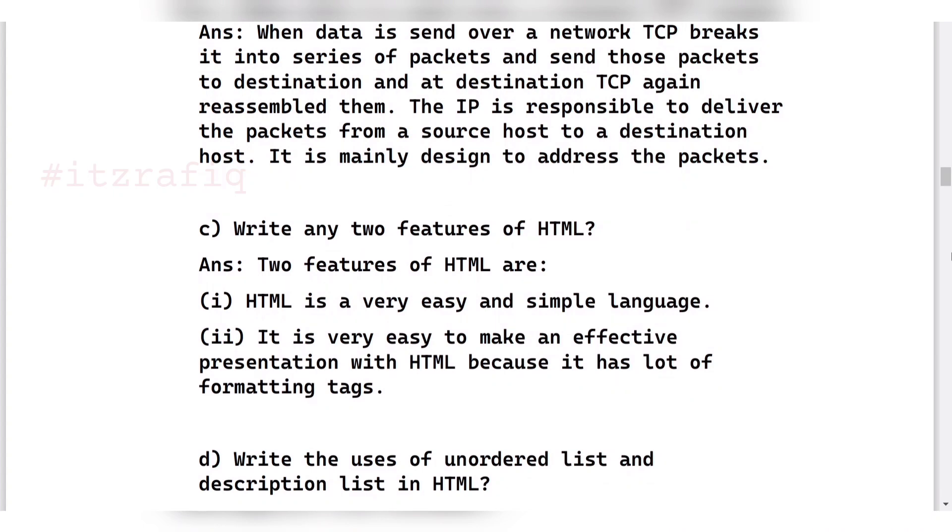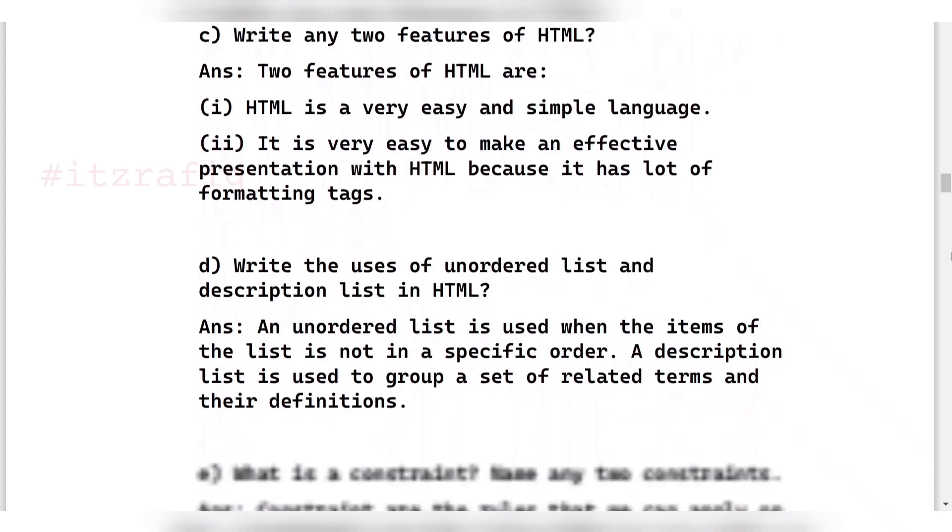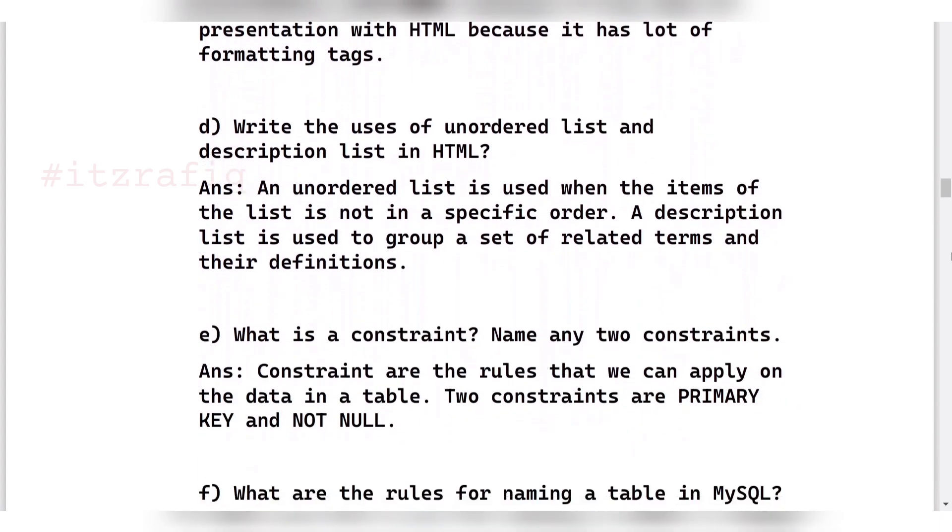Then what are two features of HTML? It is a very easy and simple language, and it is very easy to make effective presentations because it has many formatting tags. What is the use of unordered list and description list? An unordered list is used when the items of the list are not in a specific order. A description list is used to group related terms with their definitions.